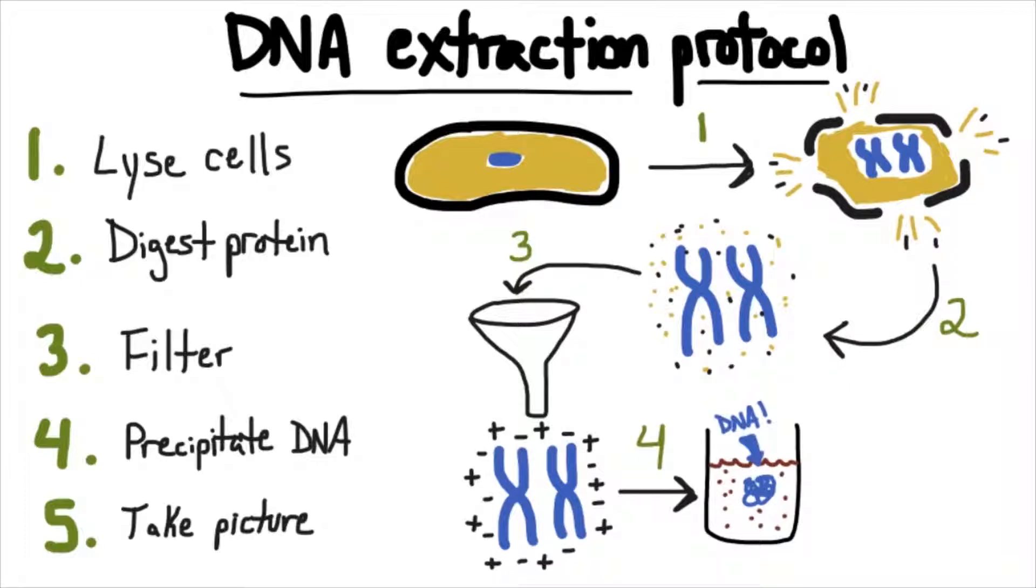Then we'll take our filtered liquid and add the alcohol so that our salty DNA can precipitate out of solution. Finally, we'll collect the DNA with our fork and take a picture to post online.